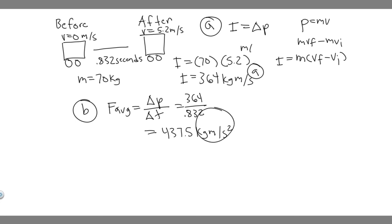And keep in mind, this is just newtons. So 437.5 newtons, that's going to be the average total force experienced by our passenger. So 437.5 newtons is your answer to B, and your answer to A is 364 kilogram meters per second.